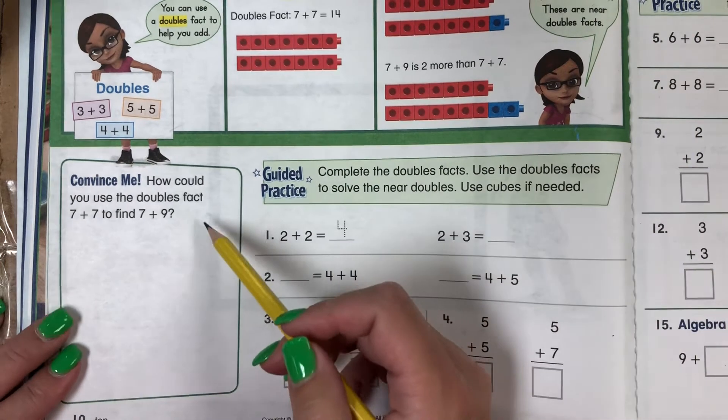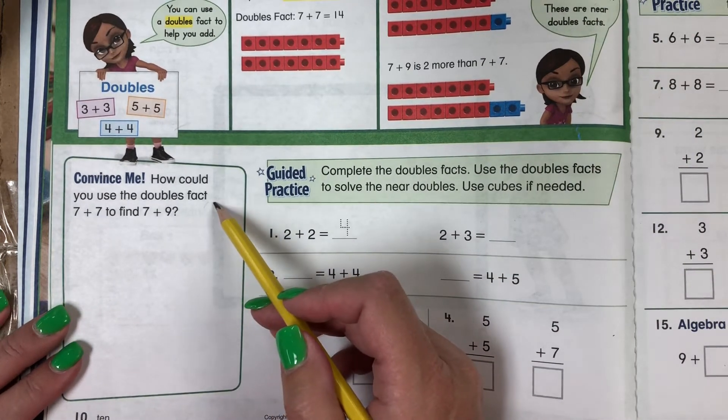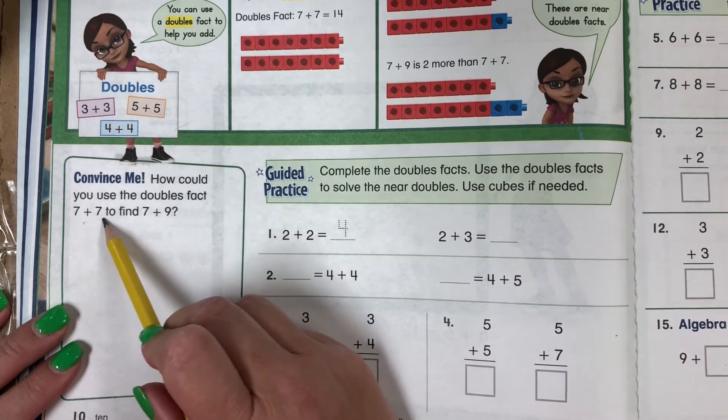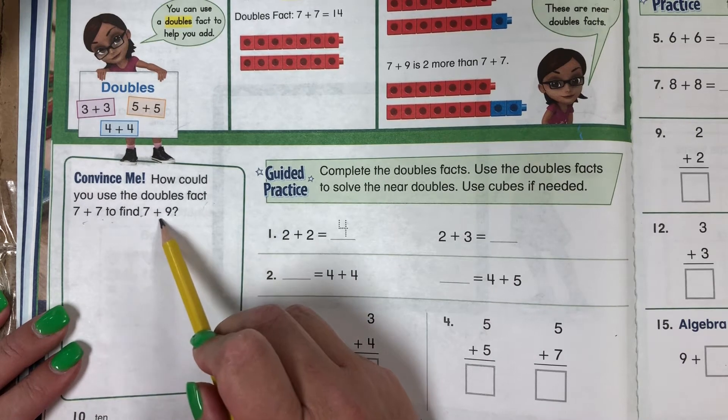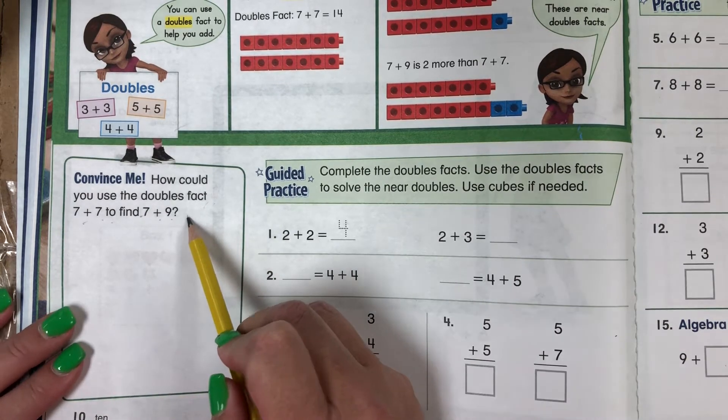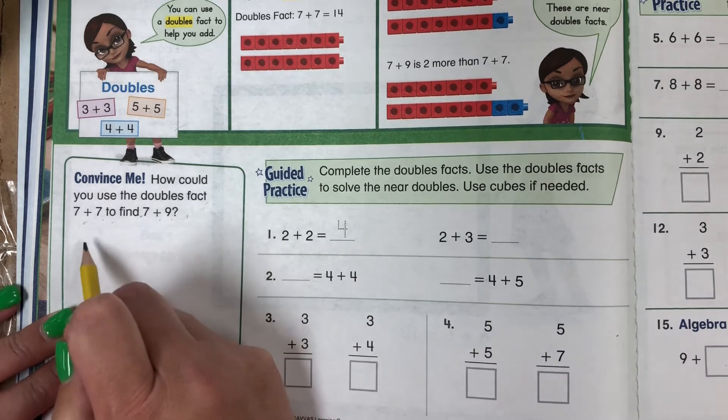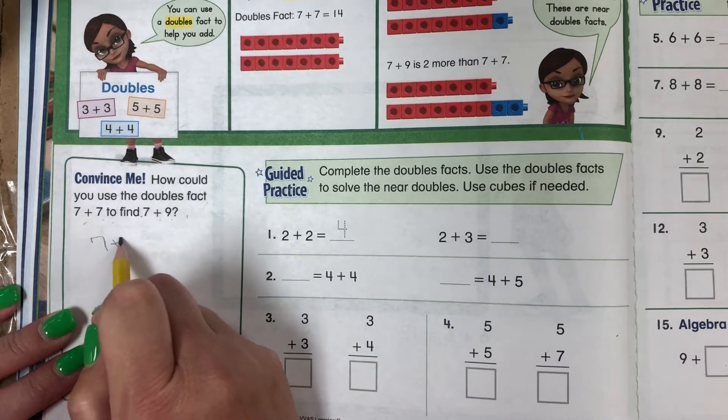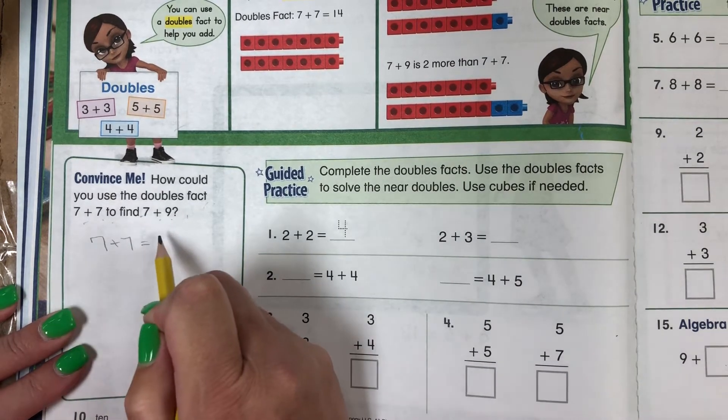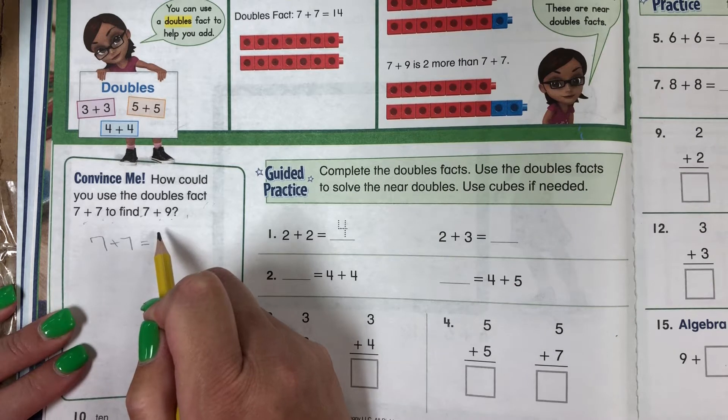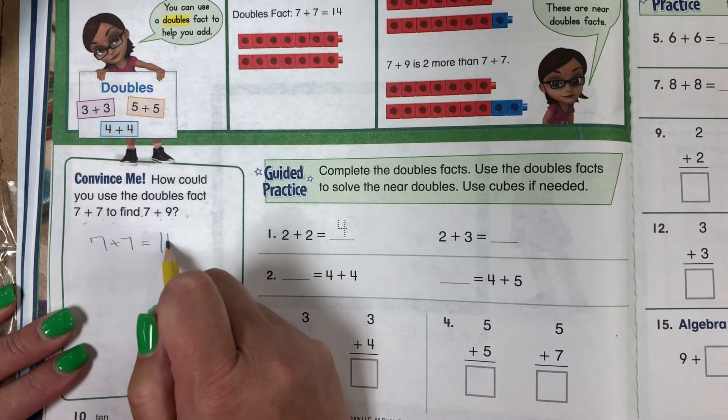First of all, convince me. How can you use the doubles fact 7 plus 7 to find 7 plus 9? If you have 7 plus 7, you know it equals what? That's right, 14.